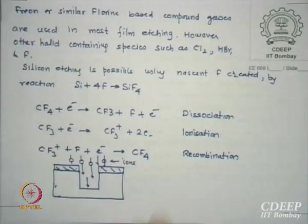Oxygen plasma is good enough without any direction — it can remove the resist. This is called ashing. These reactions are written down and available in every etching textbook. Which gas is now banned? Freon is now banned.